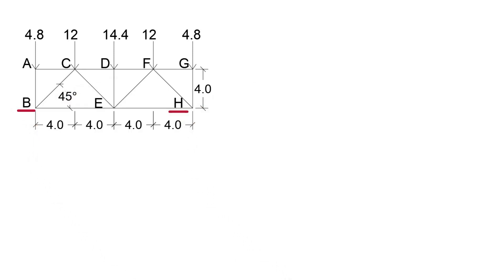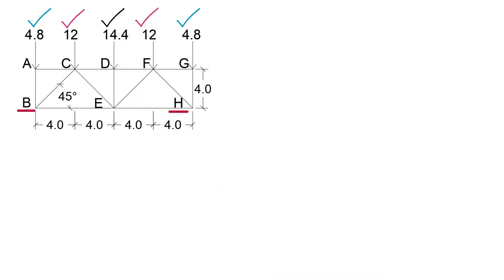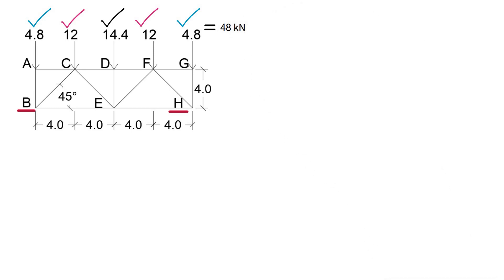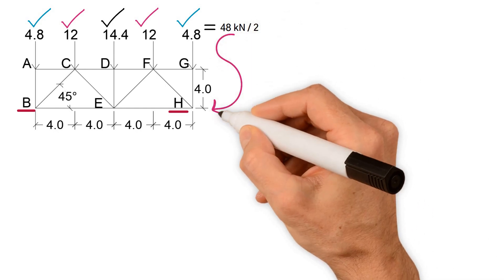For equilibrium, they should equal the sums of 2P1, 2P2, and P3. This equals 2 by 4.8 plus 2 by 12 plus 14.4, we get 48 kilonewtons. Consequently, the forces at B and H are 48 divided by 2, which equals 24 kilonewtons.